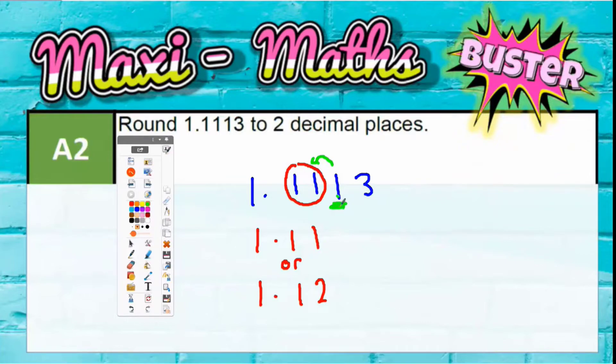We would only round up if this digit was 5 or higher. So if it's less than 5, it stays as it is. So the correct answer is 1.11.